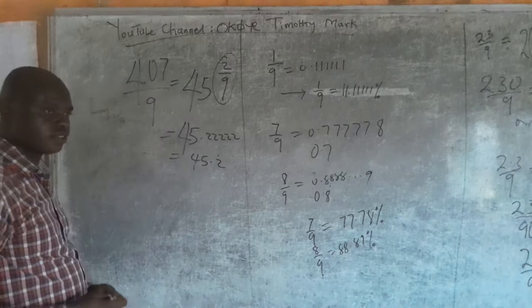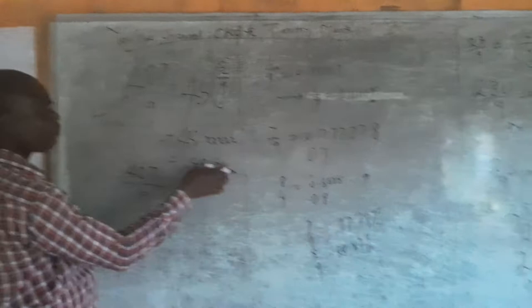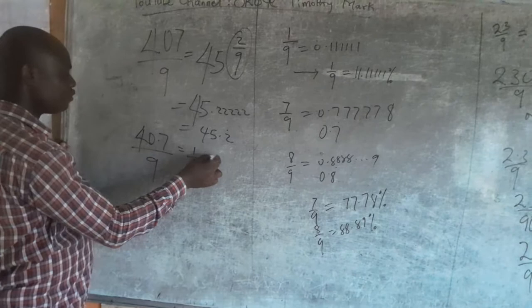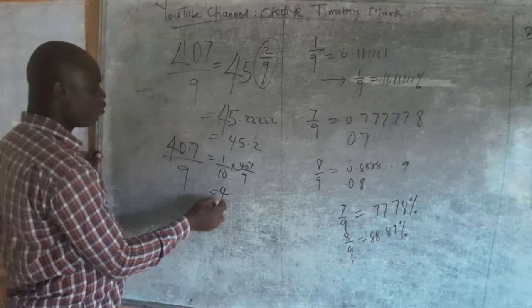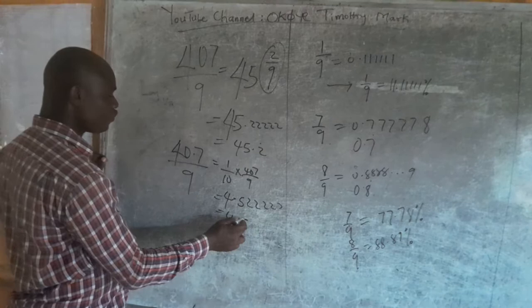So if you give me 40.7/9, I already know that 407 as a whole number is 45.2 repeating. And 40.7 is one-tenth, that is 1/10 times 407/9, so I simply divide by 10, giving 4.52222. In mathematical language, that's 4.5 with a dot on the 2, because 5 is not repeated but 2 is repeated indefinitely.